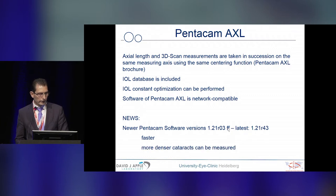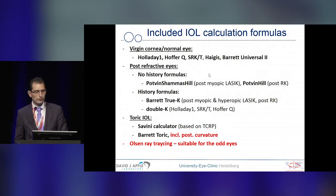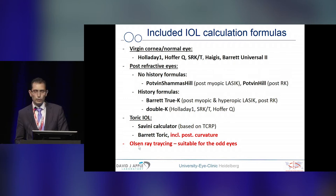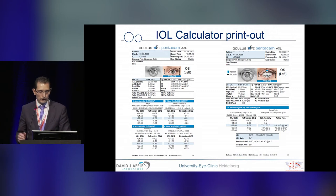The software is network compatible — the latest version is 1.21 R43, available on a free basis. It is faster and enables measurement of more dense cataracts. An intelligent mathematical algorithm allows the machine to select the most reliable axial length values from six consecutive single measurements. IOL calculation formulas included cover regular eyes, post-refractive eyes with and without history, and toric IOLs. The very toric formula includes posterior curvature. The new software also introduces Olsen ray tracing, suitable for odd eyes with corneal scars, which is very important for the Heidelberg study I will show you shortly.